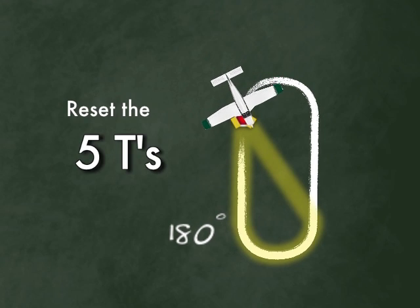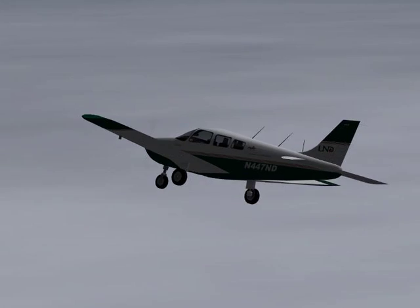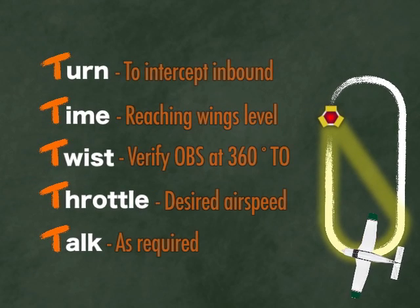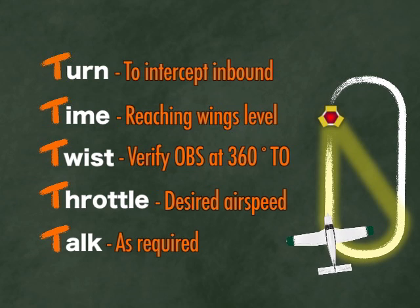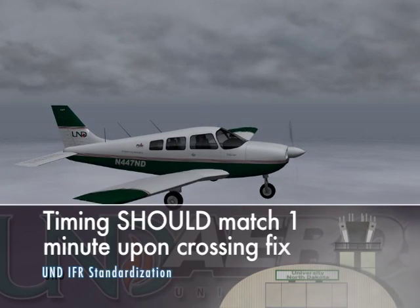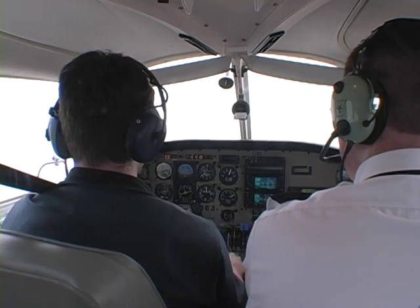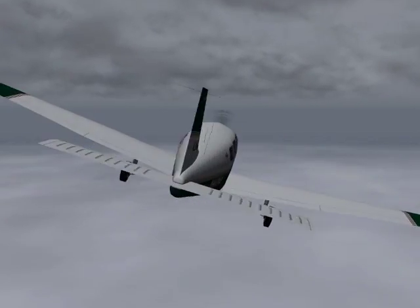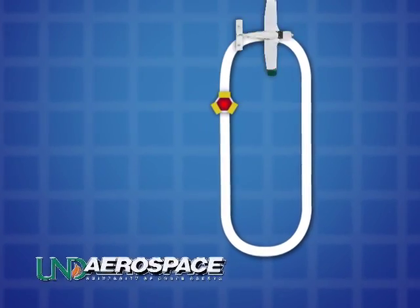As the aircraft crosses the fix and proceeds outbound on the teardrop entry, it would then be time to reset the five T's for the turn inbound. After flying outbound on the teardrop for one minute, the pilot will turn to intercept the inbound course, begin timing once the wings are level, and verify that the OBS is still twisted for correct sensing inbound. As the pilot levels the wings and begins timing, he or she will look for the timing to match one minute upon crossing the fix. The pilot will then turn to the outbound leg after considering a new set of five T's — time for one minute outbound in a zero-wind situation — then turn inbound once again and fly back to the fix for a complete one-minute standard holding pattern.